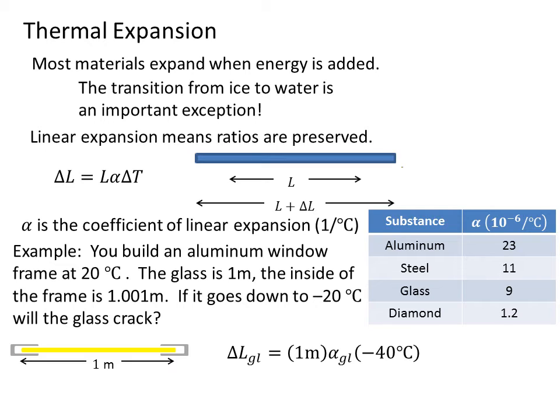Well, what is the change in length of the glass? That's 1 meter times the coefficient of linear expansion for glass, which is 9, times minus 40 degrees C. So that's 9 times minus 40 times 10 to the minus 6, or in other words, minus 0.00036 meters, or about minus a third of a millimeter.